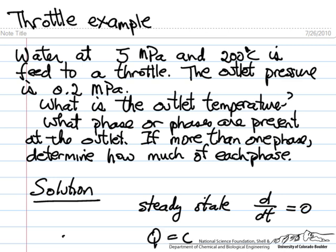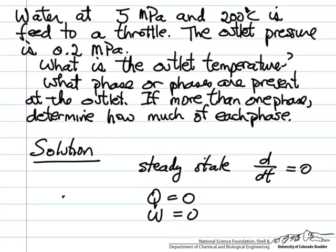We'll assume it's adiabatic so that Q is zero. The residence time in the throttle is short. There's not much time for heat transfer. There's no work being done. So the first law simplifies to delta H equals zero.